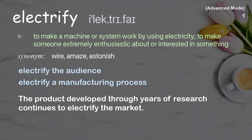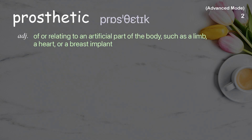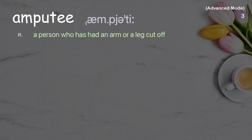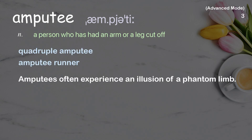Prosthetic: of or relating to an artificial part of the body such as a limb, a heart, or a breast implant. Examples: prosthetic arms, prosthetic limbs. New prosthetic joints are less prone to metal poisoning. Amputee: a person who has had an arm or a leg cut off. Examples: quadruple amputee, amputee runner. Amputees often experience an illusion of a phantom limb.